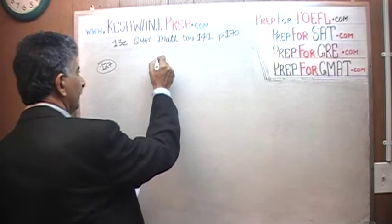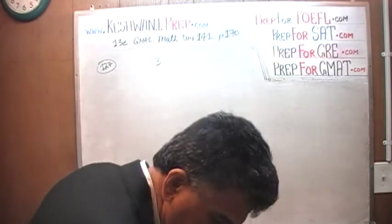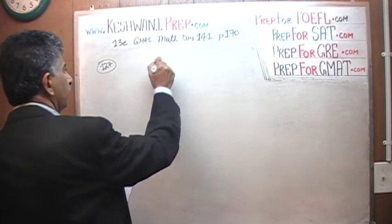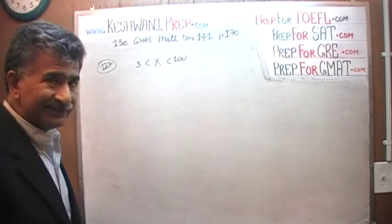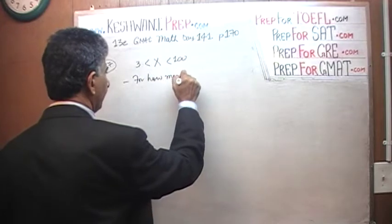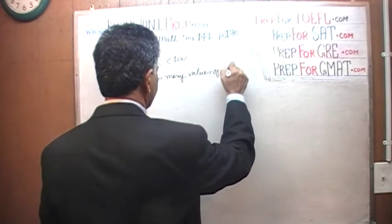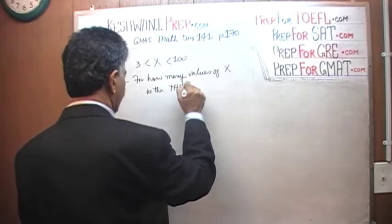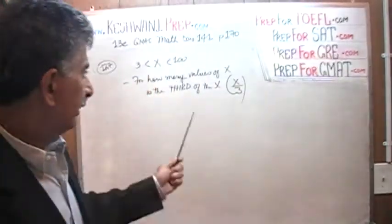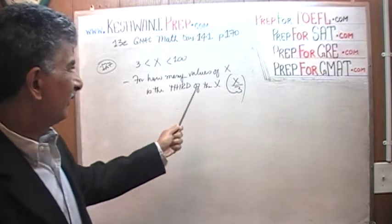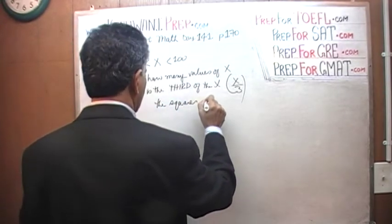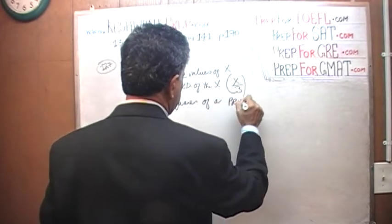We are given some number X, and we are told that that quantity X, whatever it is, lies between 3 and 100 — it has to be less than 100 and greater than 3. The question simply is: for how many values of X is one-third of X, which they show as X over 3, the square of a prime number?